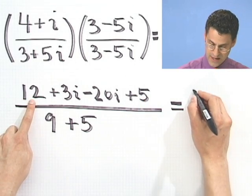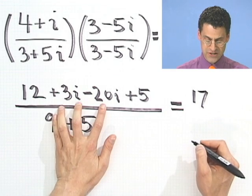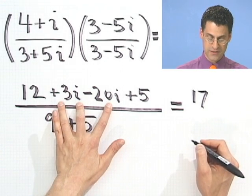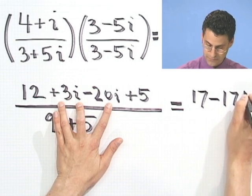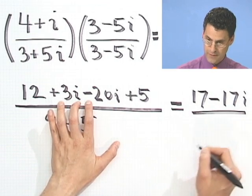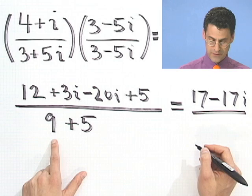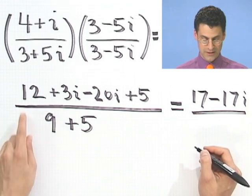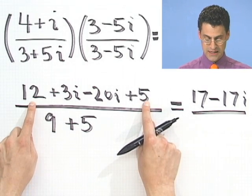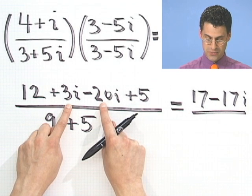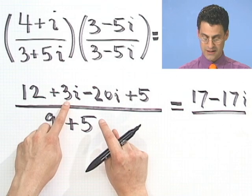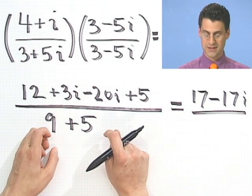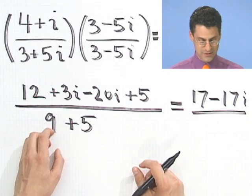The real parts produce a 17. The imaginary parts, minus 20i plus 3i, is like a minus 17i. Divided by, and then, let's make sure I did that correctly though. So I've got 17. And then if I take 20 and I subtract 3, let's see what happens here. Now, there's a problem. Let's see if we can figure it out here.